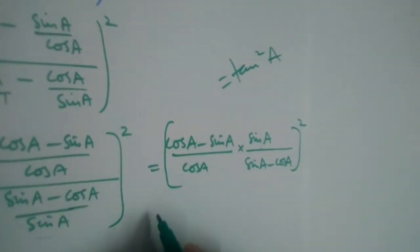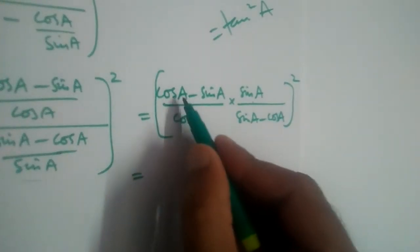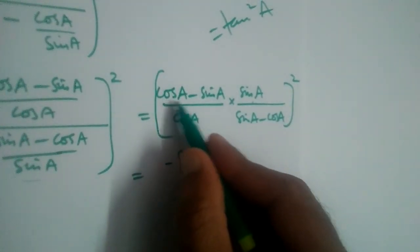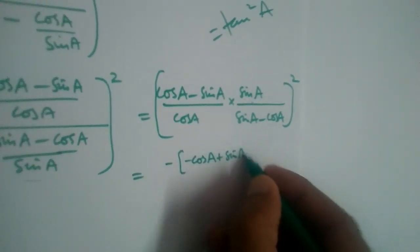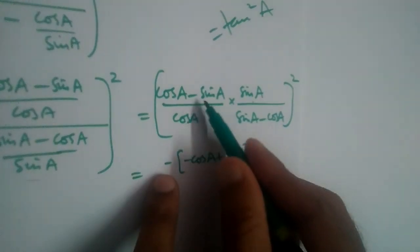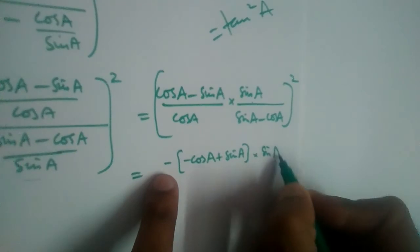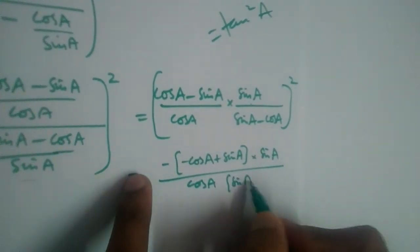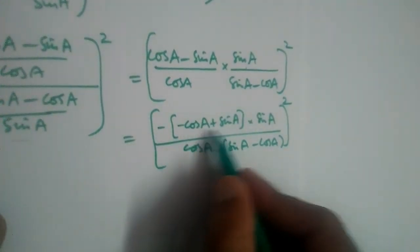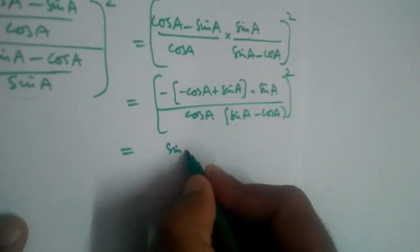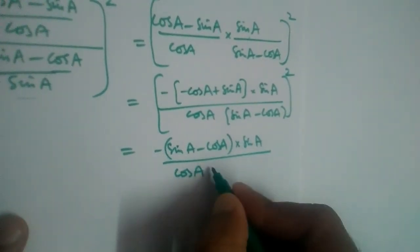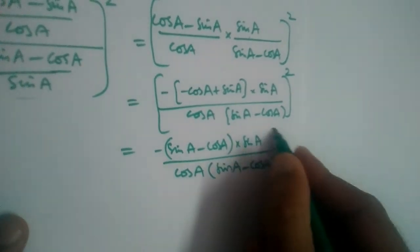The signs are different: we have (cos a − sin a) and (sin a − cos a). We take a minus out from (cos a − sin a), which gives minus(sin a − cos a). So the expression becomes: minus(sin a − cos a) / cos a, multiplied by sin a / (sin a − cos a), whole square. The (sin a − cos a) terms cancel out.